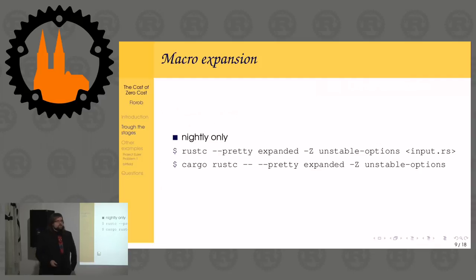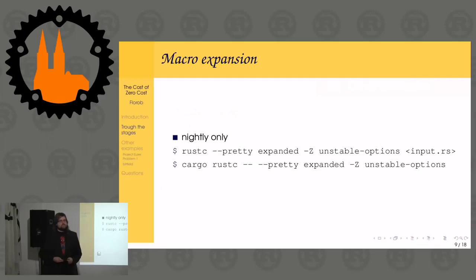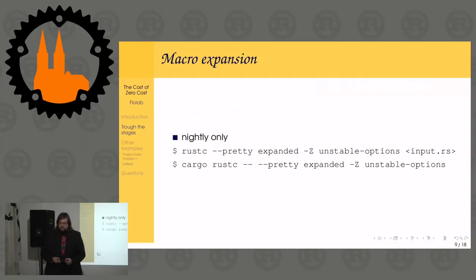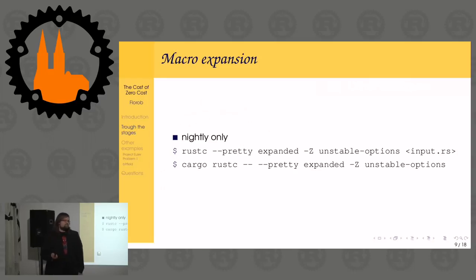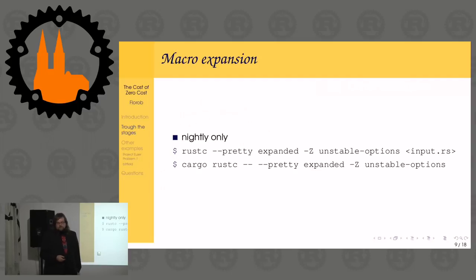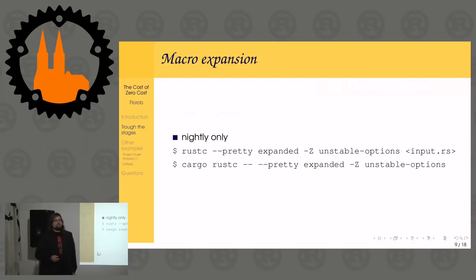The first thing we can do - actually none of those intermediate representations - is have rustc just expand some macros. This only works on nightly and requires the option `-Z unstable-options`, because even the option to do that is unstable. The option is `--pretty=expanded`, which expands all macros and dumps the parsed Rust back at you.